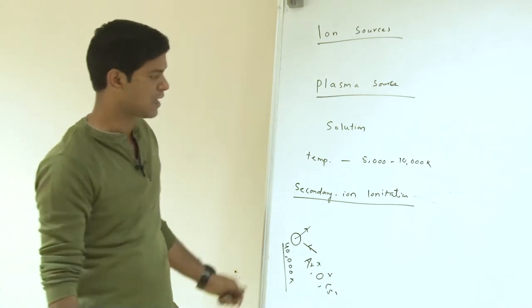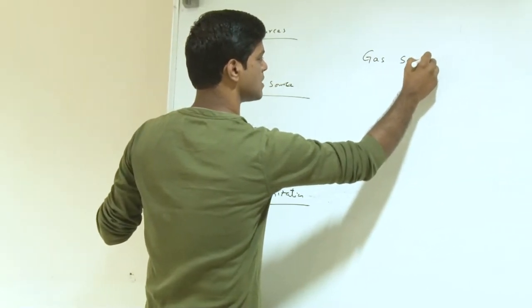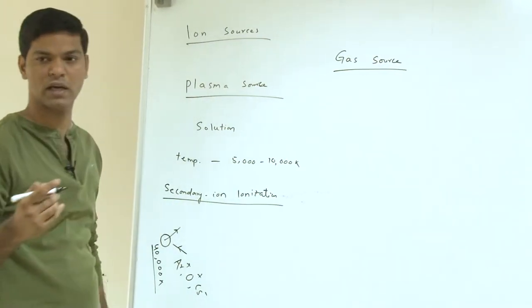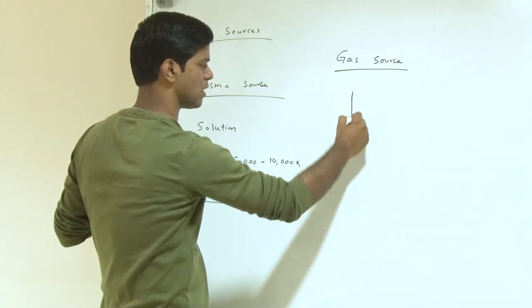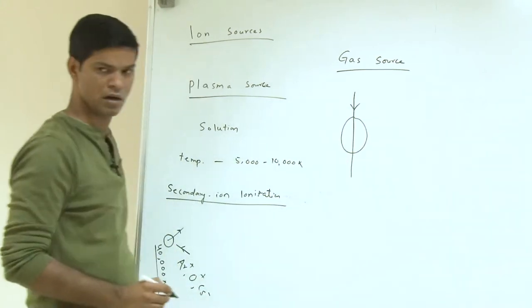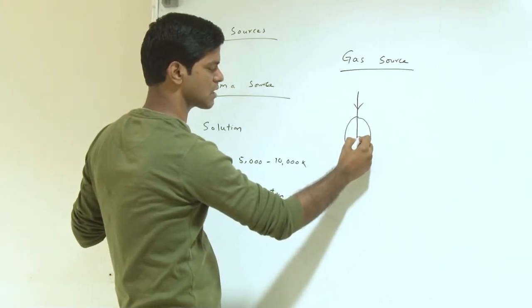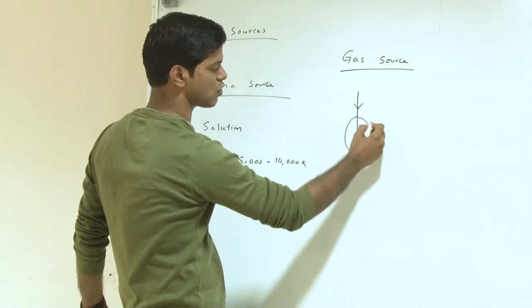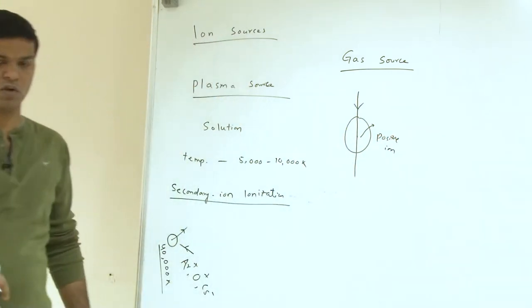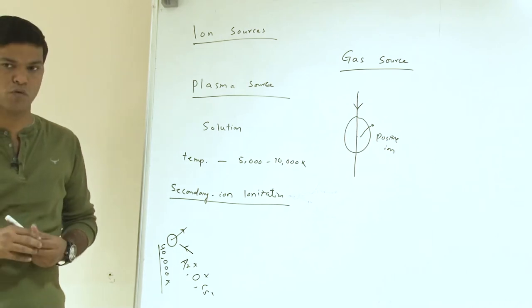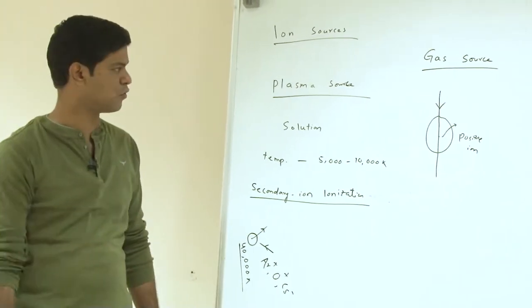This can be another source of ionization. So we have talked about solid sources where TIMS - thermal ionization mass spectrometer - and secondary ionization mass spectrometer (SIMS) are solid sources; plasma is solution phase. In case of a gas source, like we use for many stable isotope analyses, you can have an electron gun - you can have a gas chamber, pass an electron beam through it - and the energy of this electron beam can knock out electrons from atoms and create a positive ion. You can hit the gas with an electron gun to create positive ions, and these are more frequently used for gas sources.